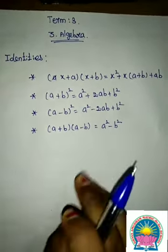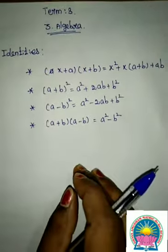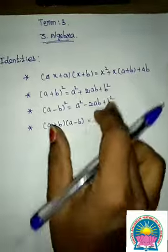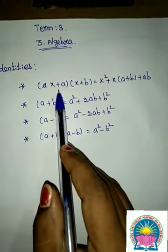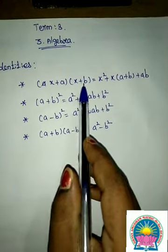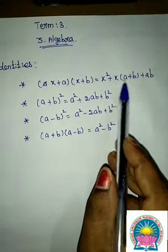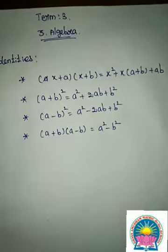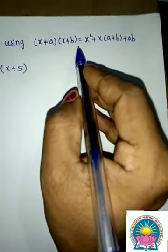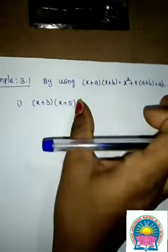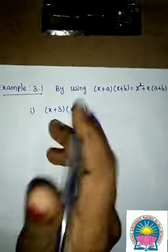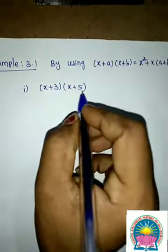In the four identities, before class, I will explain how to apply them. We will do sums based on these four identities. For Identity 1, we use: (x + a)(x + b) = x² + x(a + b) + ab. Example 3.1 — listen children: using this identity, solve the given sum. The given sum is (x + 3)(x + 5).